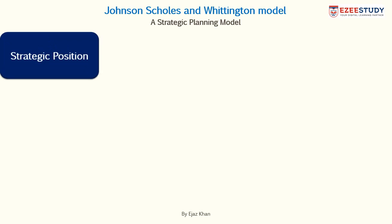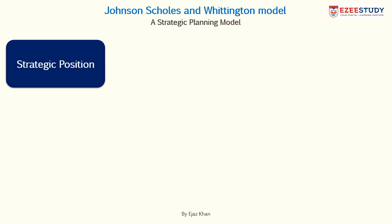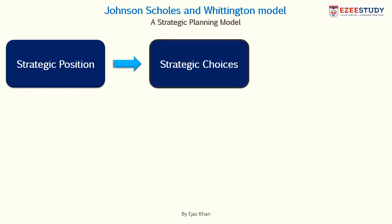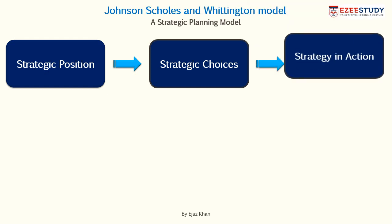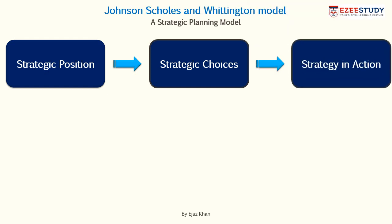According to the Strategic Planning Model, a company when it is formulating a strategy for its organization has to go through three steps. The first step is to analyze its strategic position against the environment it's operating in. The second step is to identify strategic choices that will take this organization from its current strategic position to the desired strategic position. And then once a strategy or strategies are chosen, the next step will be to implement those strategies and put those strategies into action successfully.